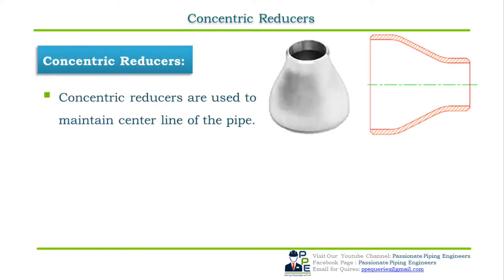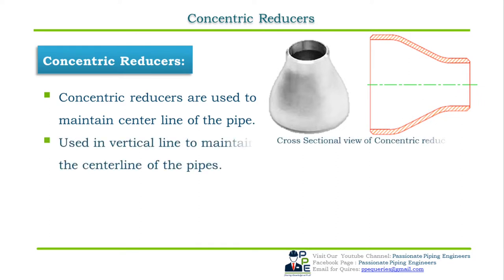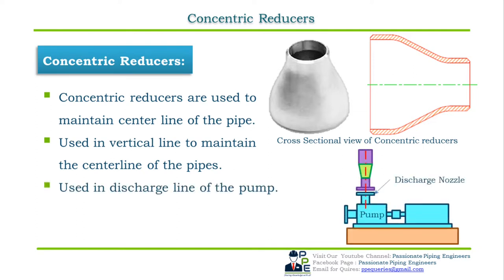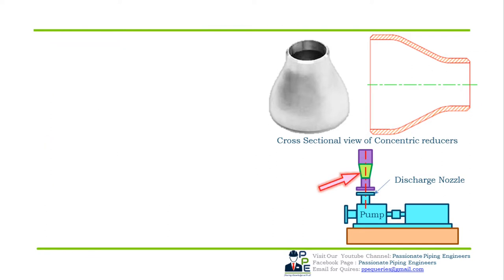Concentric reducers are used to maintain the centerline of the two different line sizes. As seen in the cross-sectional view, there is only one centerline that intersects both the large and small pipe diameters. Concentric reducers are most commonly used in vertical lines to maintain the centerline of the pipes, and more commonly used in the discharge line of a pump.